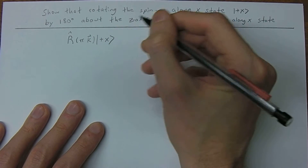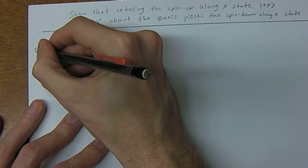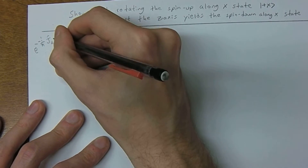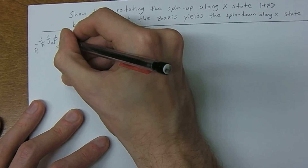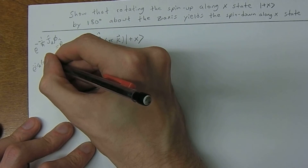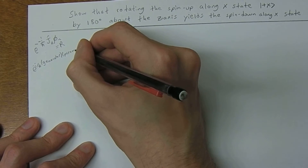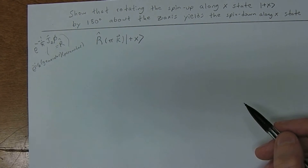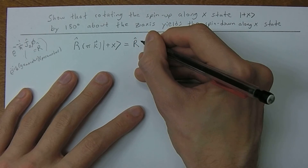We're going to act this operator on the plus-x ket. We can write the rotation operator as e to the negative i over h-bar, times the generator of rotations, times some angle phi. So e to the negative i over h-bar times the generator of rotations times the parameter phi equals our rotation operator.